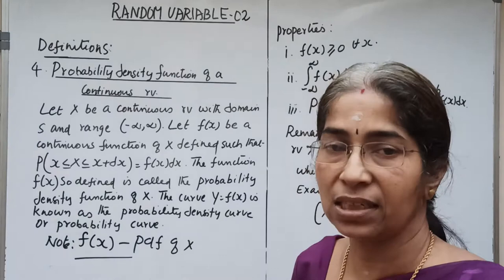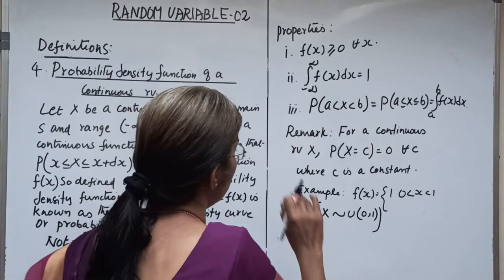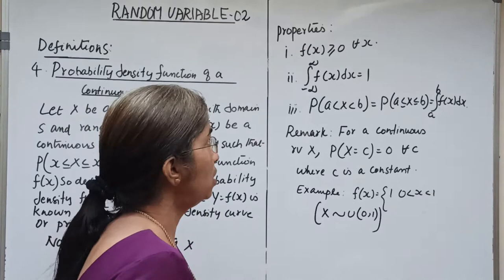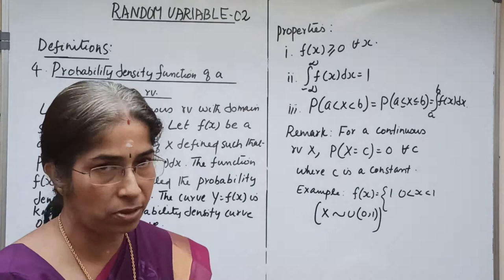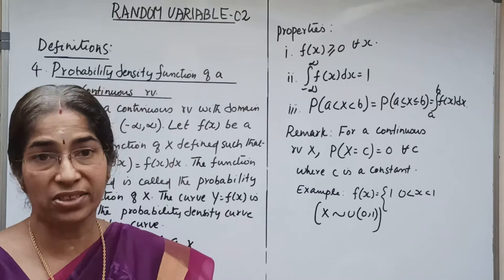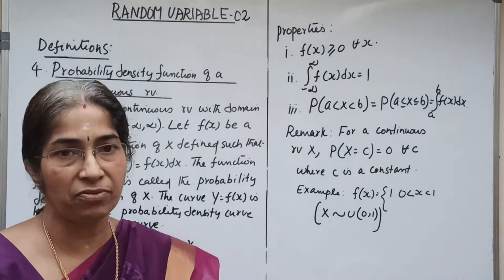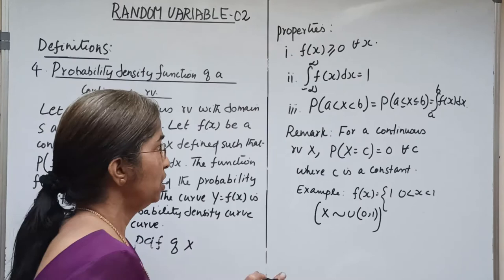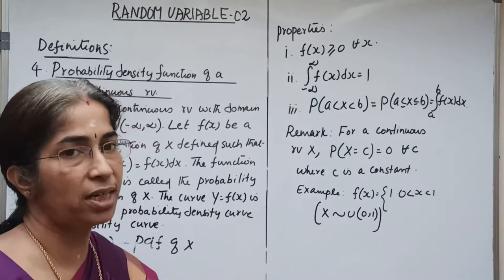As these are probabilities, the properties should be: f(x) greater than or equal to 0 for all x — that is, all f(x) values are non-negative. And the total probability equals 1 in the case of a continuous random variable. As these random variables are defined over intervals, we integrate the function: the integral from minus infinity to infinity of f(x) dx equals 1.